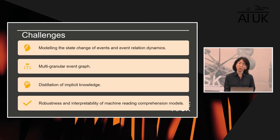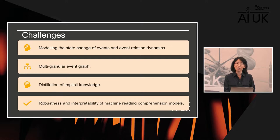That was a quick overview of three pieces of work on machine reasoning for language understanding. We still face a range of challenges. The first is how to model the state changes of events and event relation dynamics, because event attributes are not static — they change over time. For example, the UK growth rate differs at different points in time, and with the incorporation of other events, event causal relations might change as well.